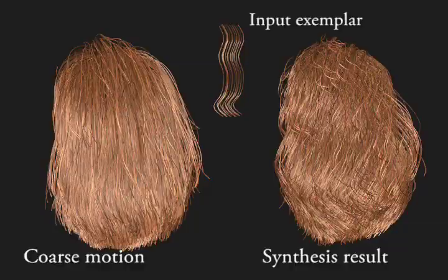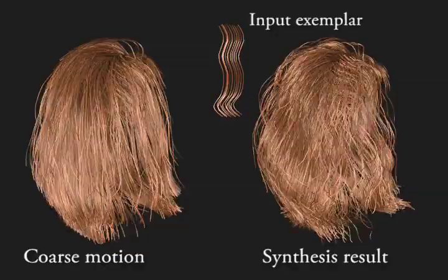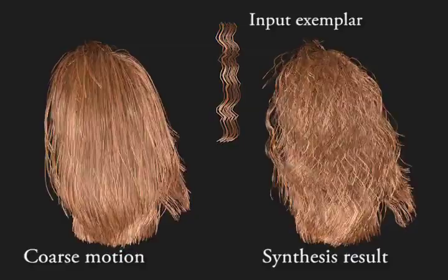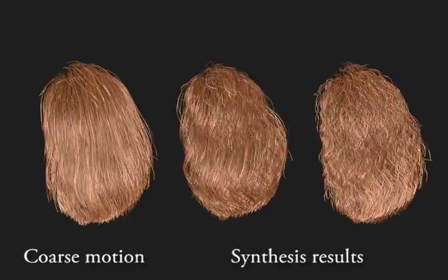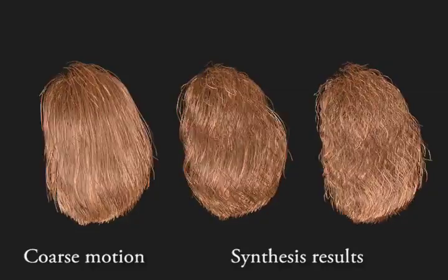After that, we can add new details to the coarse hairs. In other words, we keep the coarse hair structure and motion, but replace the details with different input exemplars. The small input exemplar is shown in the middle, while the final output is shown on the right. Notice the geometric details and additional motions introduced by our method with different exemplars.